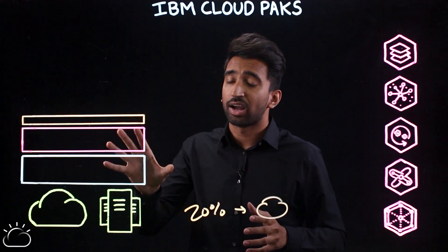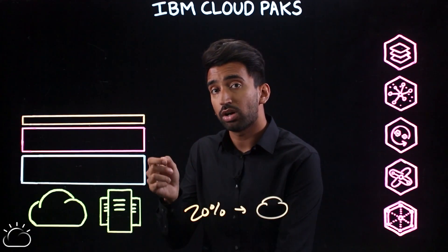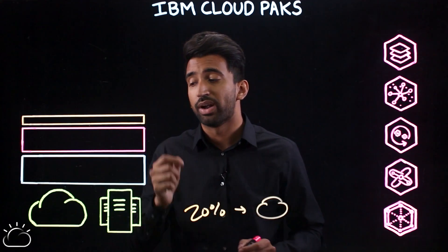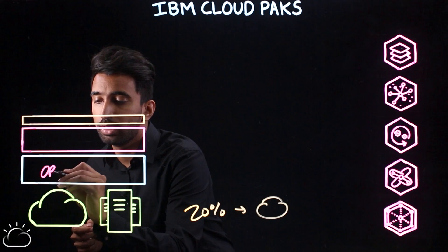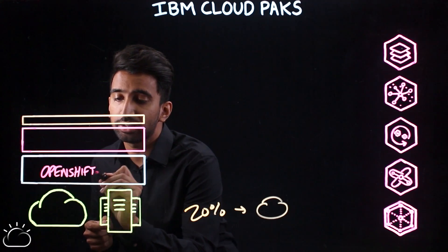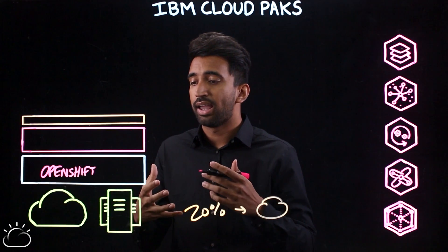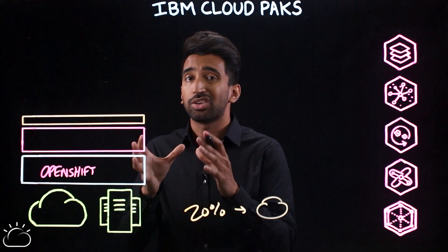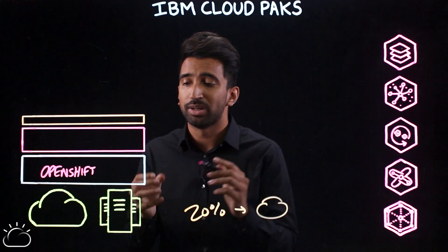IBM has identified key challenges preventing businesses from moving to the cloud and created what we're calling IBM Cloud Packs. Let's start building out the stack that supports Cloud Packs. It starts with Red Hat OpenShift, their flagship container platform, which is based on container and Kubernetes technology.